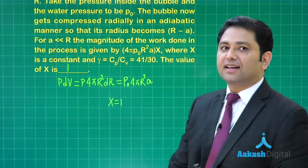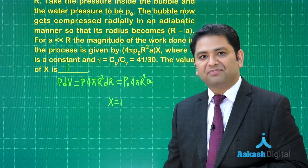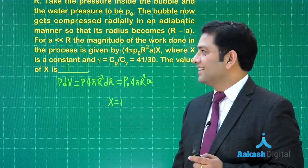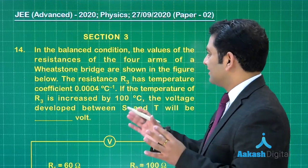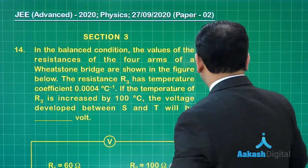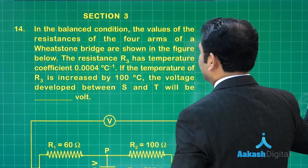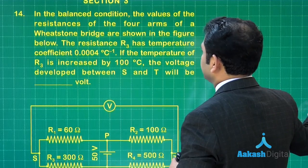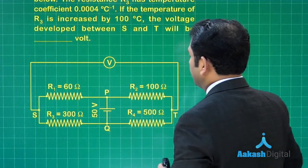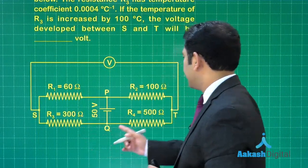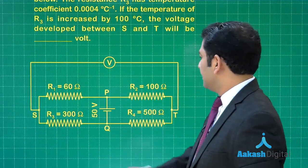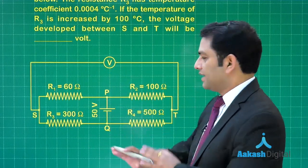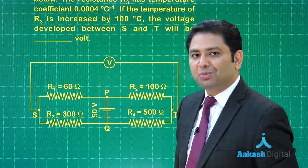Let us see now, 14th is also a beautiful one from current electricity. In the balance condition, the values of resistances of the 4 arms are as shown. So this is 60, 300, 100, 500. So 1 is to 5, 1 is to 5, it is a perfect balance with Wheatstone condition.